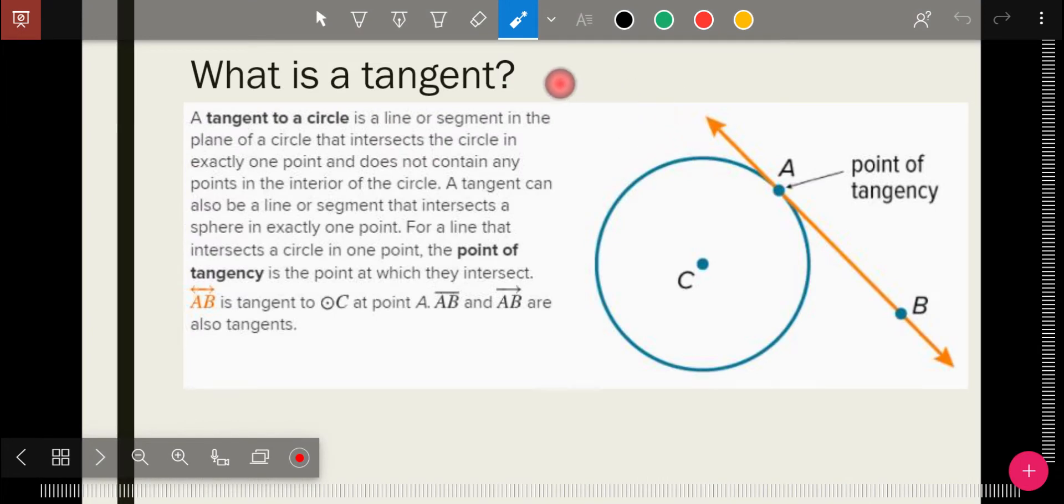So let's jump right into the vocabulary. A tangent - this is the full definition from the book. So let's try to simplify that. A tangent is a line or a segment that just barely grazes the circle. It just touches it at one point. So it just touches the circle, just barely. And so that point is the point of tangency. It's the point where the tangent and the circle meet. And our rules are going to be tied to that point of tangency.